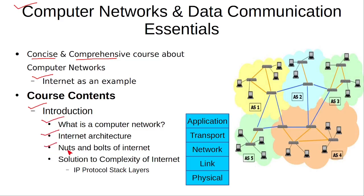The internet is a complex computer network that uses many different types of protocols and devices. In order to understand the internet, we need to simplify this complexity, and this is done using a layered approach. The protocols used on the internet are divided into five layers, and these five layers together are called the IP protocol stack.